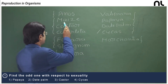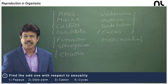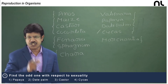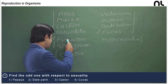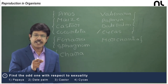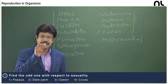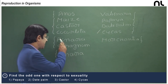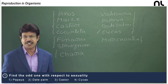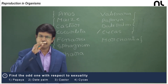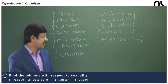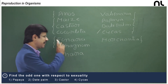Maize, castor, and cucurbits are angiosperms that are monoecious sporophytes. Funaria and Sphagnum are bryophytes where the gametophytic plant is monoecious. Chara, an alga, is also a monoecious gametophyte, having the oogonium on top and the antheridium below. So monoecious gametophytes include Funaria, Sphagnum, and Chara.